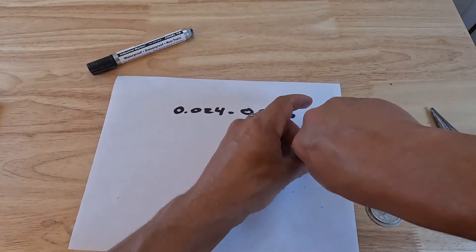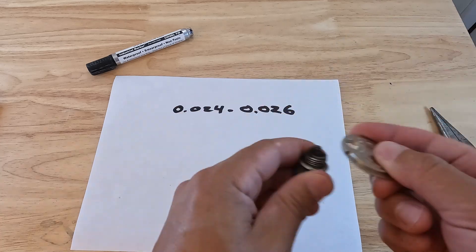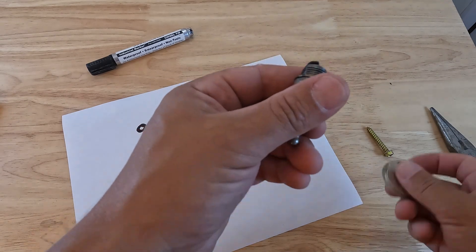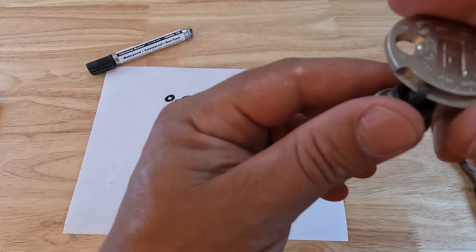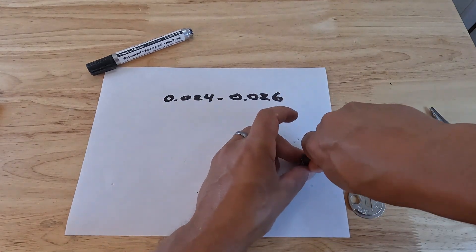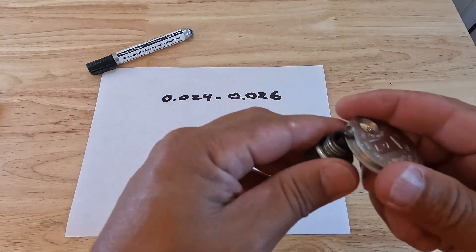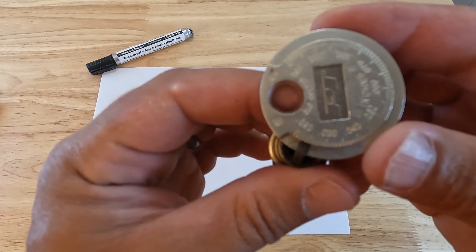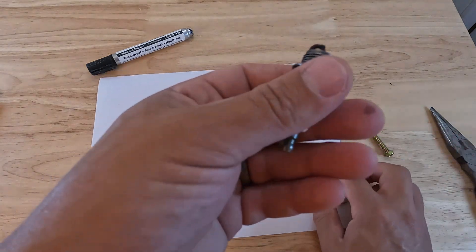It's kind of just trial and error. You just want it to be within that range. And that should do it right there. Okay, so right here we're at 0.025.